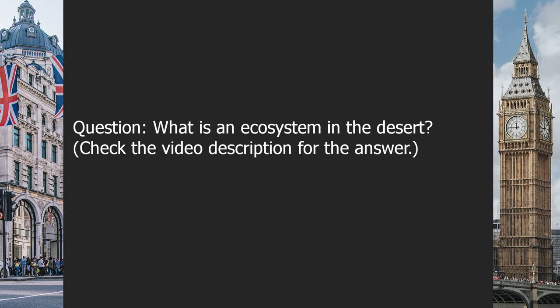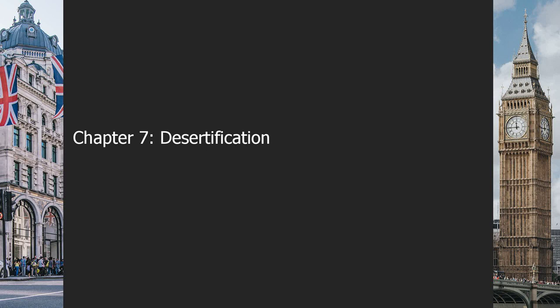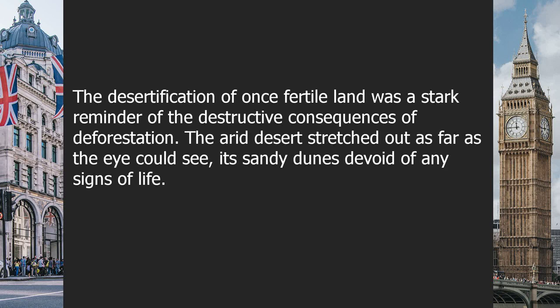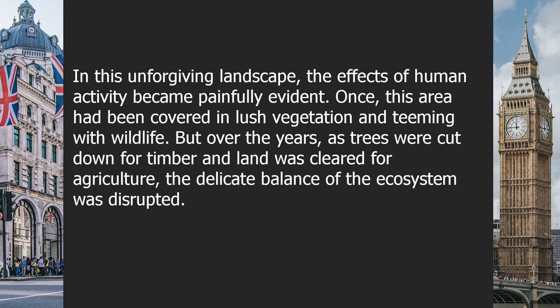Chapter 7: Desertification. The desertification of once fertile land was a stark reminder of the destructive consequences of deforestation. The arid desert stretched out as far as the eye could see, its sandy dunes devoid of any signs of life. Once this area had been covered in lush vegetation and teeming with wildlife, but over the years, as trees were cut down for timber and land was cleared for agriculture, the delicate balance of the ecosystem was disrupted.